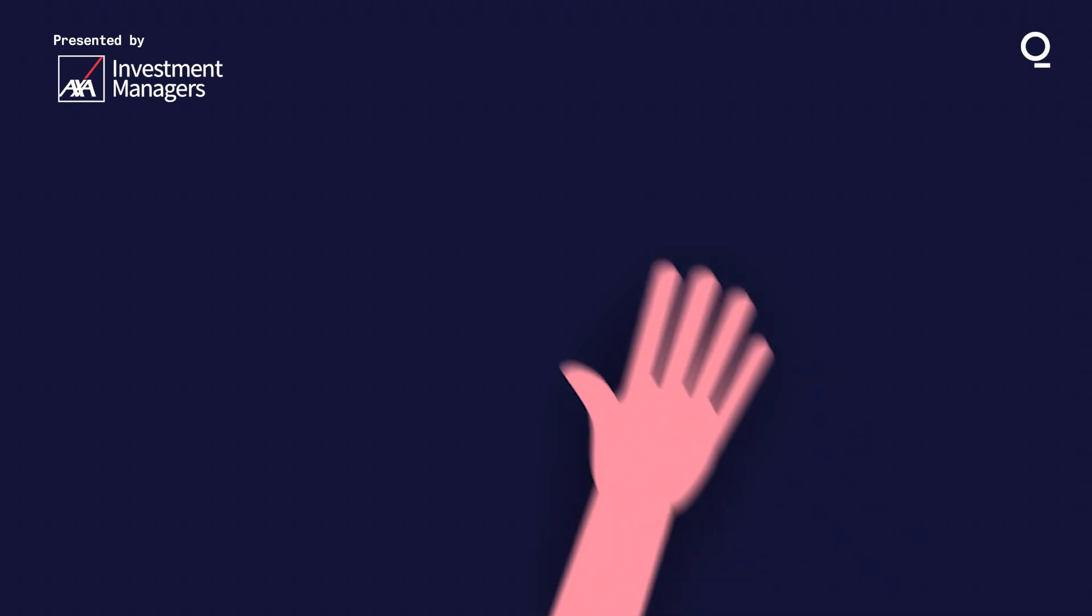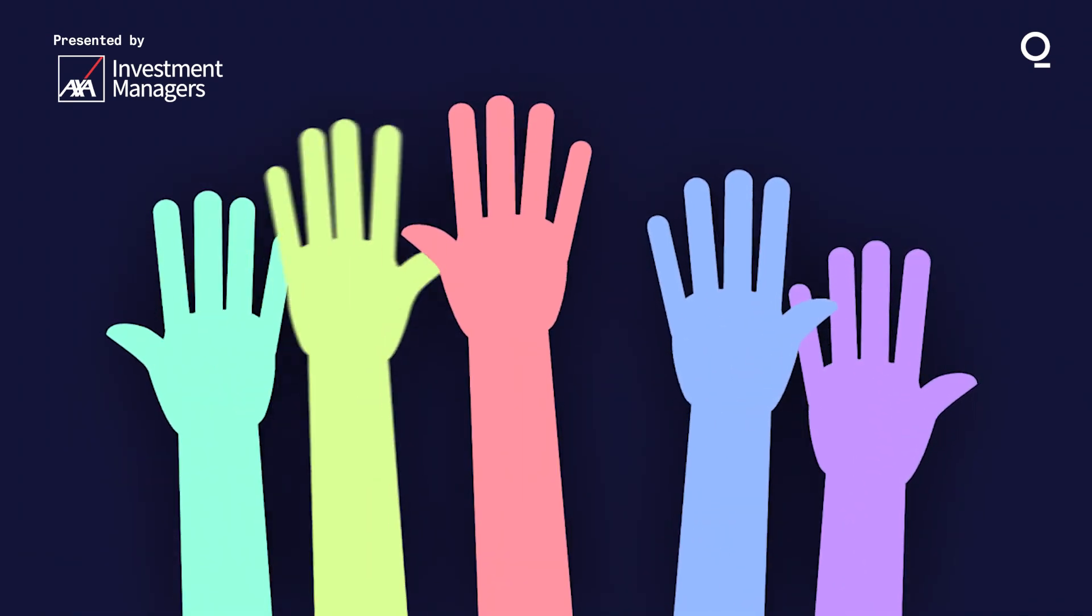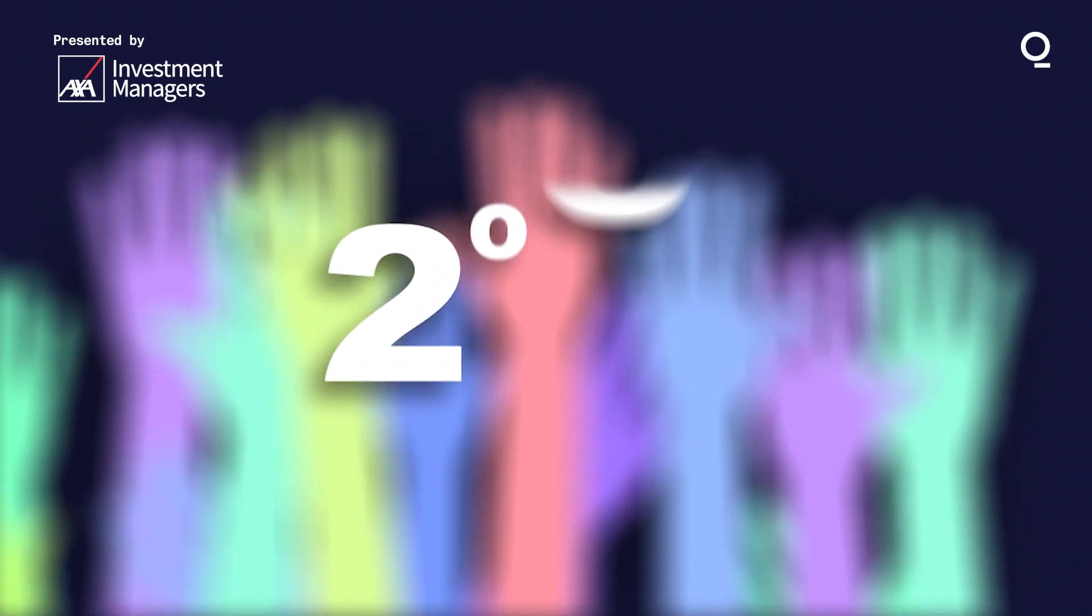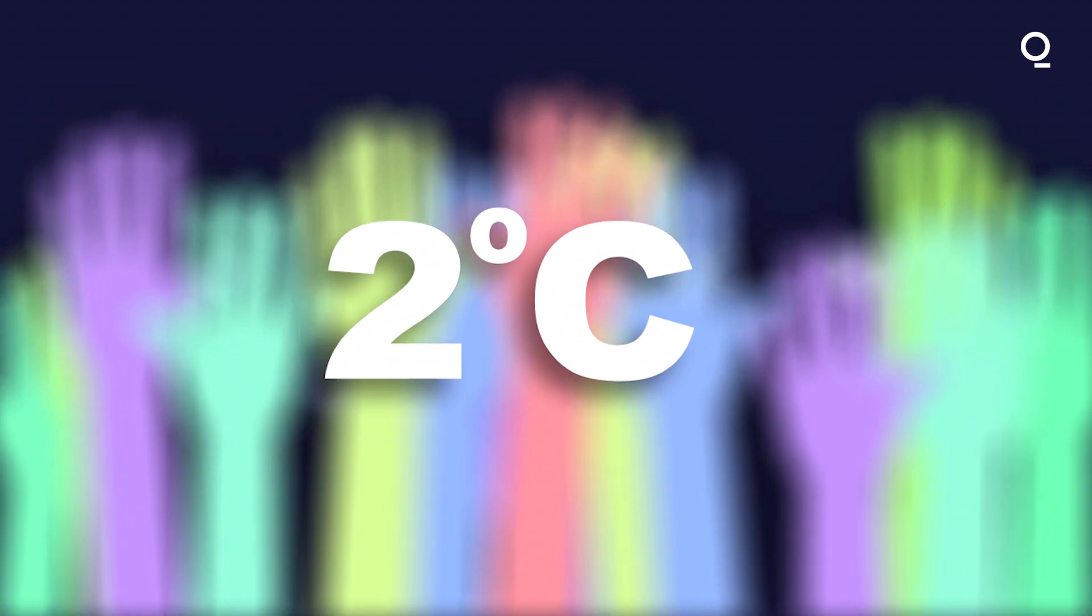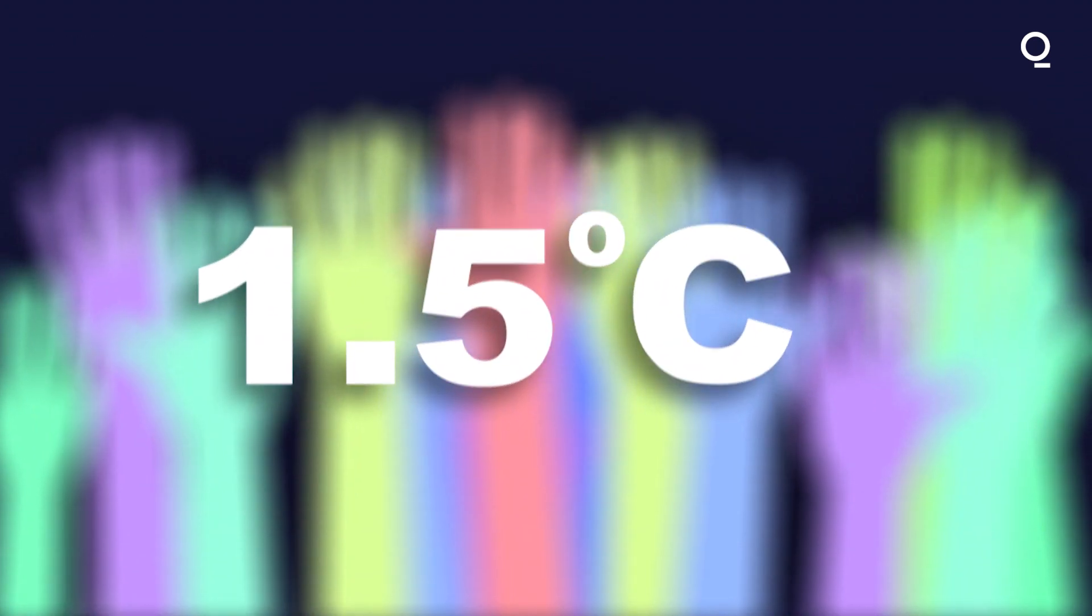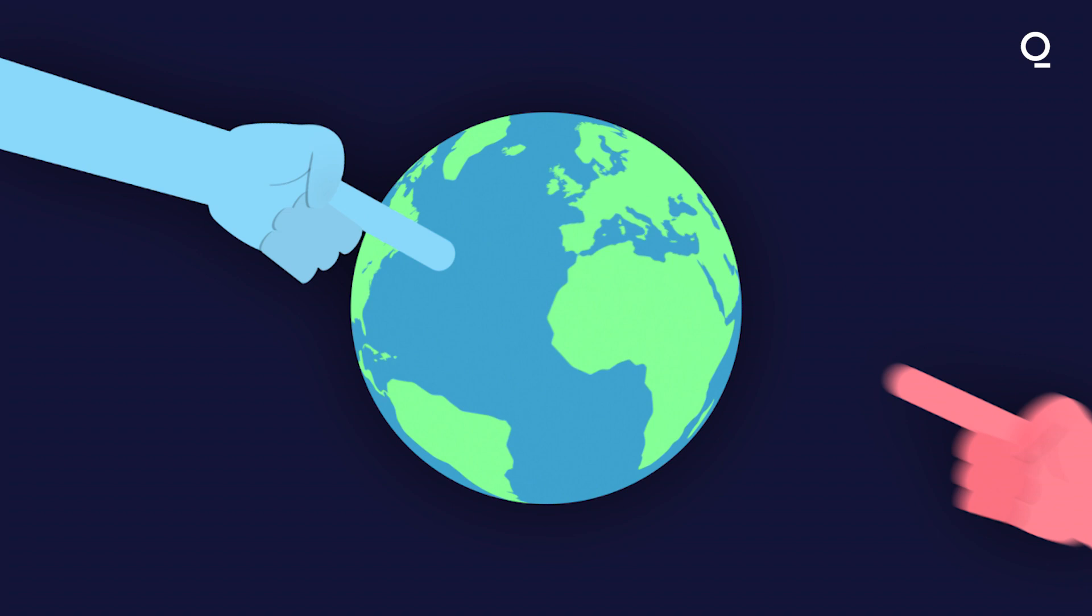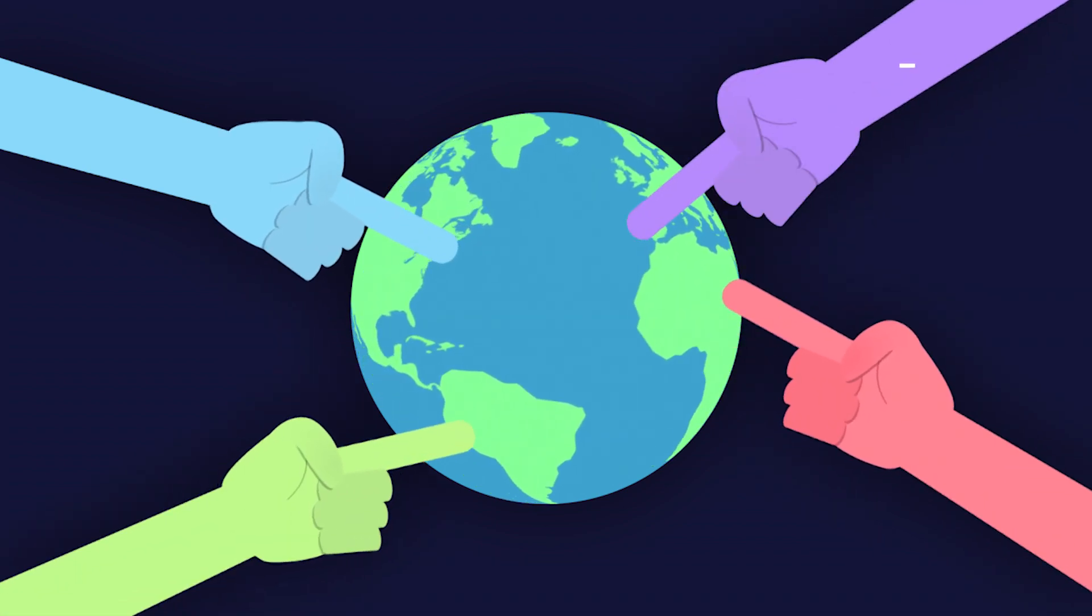The Paris Agreement is our best hope of stopping the planet from dangerous global warming, but it's just a first step. Nearly 200 nations pledged to limit temperatures from rising above 2 degrees Celsius, or if possible, 1.5 degrees. And those countries are going to be debating about who should do what for many years to come.